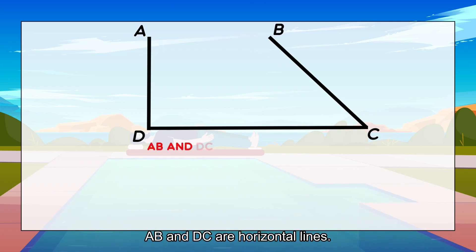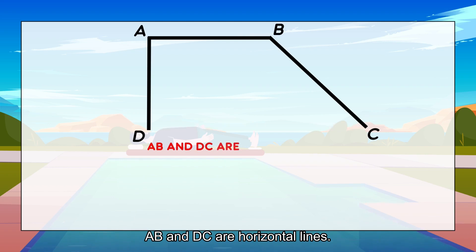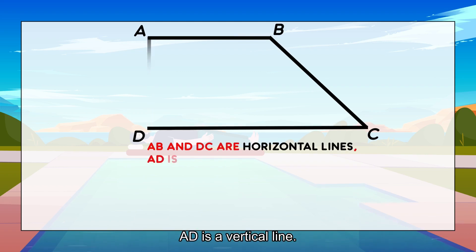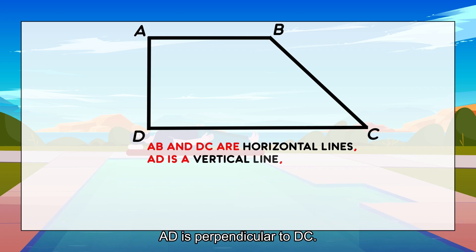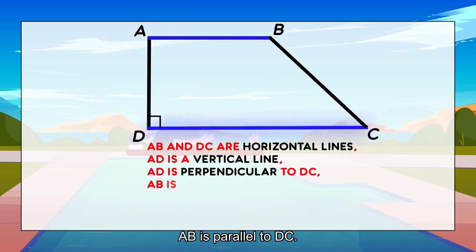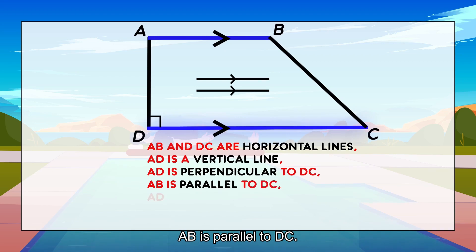A-B and D-C are horizontal lines. A-D is a vertical line. A-D is perpendicular to D-C. A-B is parallel to D-C.